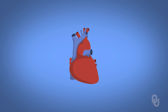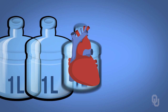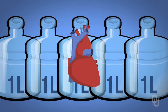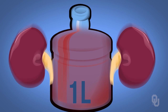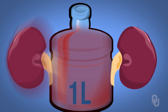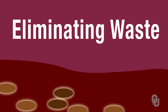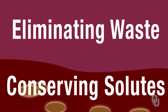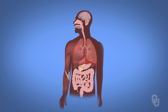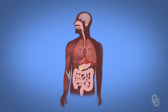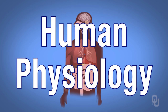Your heart will beat 70 times and pump 5 liters of blood throughout your body, 1 liter of which will be delivered to the kidneys, which will function to maintain your blood volume by eliminating waste and conserving necessary solutes. This is a mere sampling of functions that occur in our bodies every minute just to sustain life. This is human physiology.